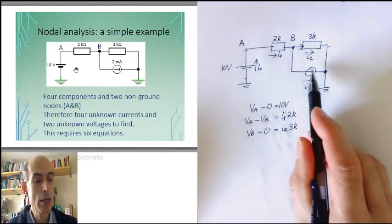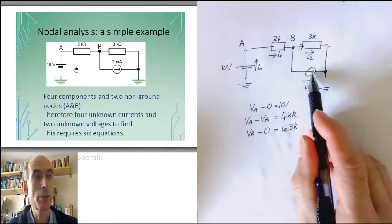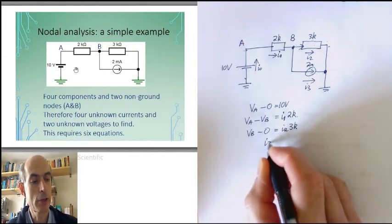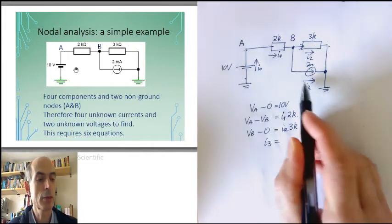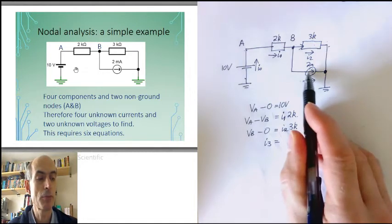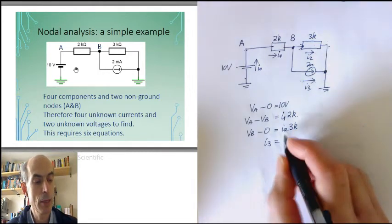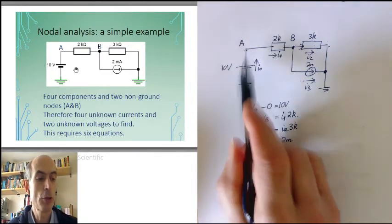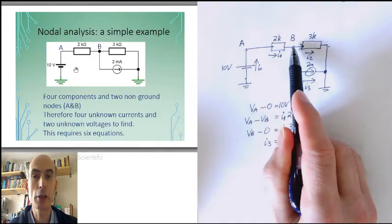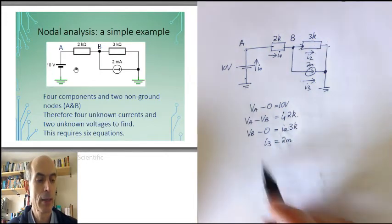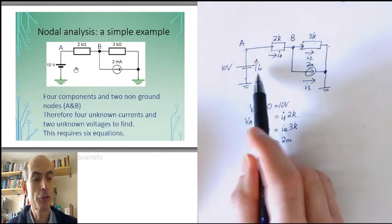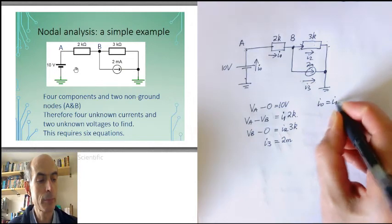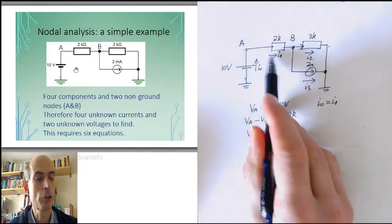And finally, the equation representing the behavior of this current source, it's a 2 milliamp current source, therefore we instantly know that I3, the current flowing through it in this direction, the same direction as the current source, is 2 milliamps. I then apply Kirchhoff's current law to the two nodes in the circuit at unknown voltages. Applying Kirchhoff's current law to this node here gives me that I0 equals I1. Total current in equals total current out.